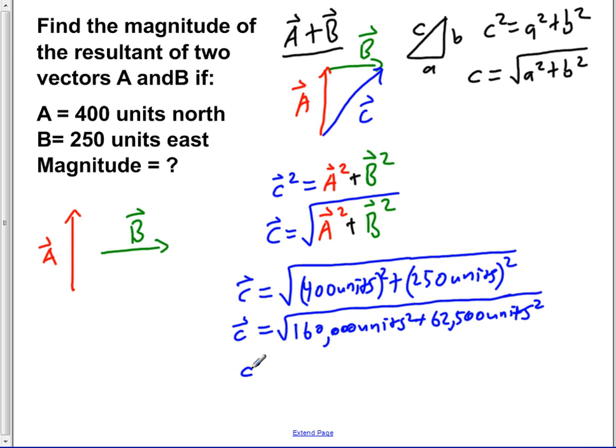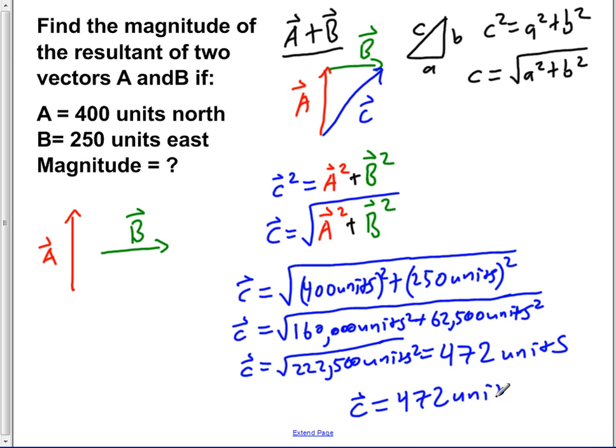If we add those together we get 222,500 square units. And if we take the square root of that, we would get the magnitude of C is equal to approximately 472 units. So this is the magnitude of the resultant vector of adding A and B using the tail to tip method.